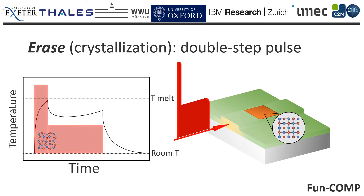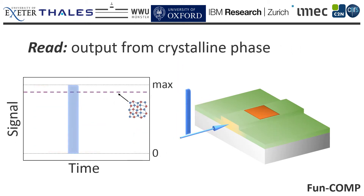but yet it drastically accelerates the otherwise negligible recrystallization, so as to recover the original optical cell phase within a few nanoseconds. A read pulse sent after the erase process reveals the new output level, corresponding to the completely crystalline optical cell.